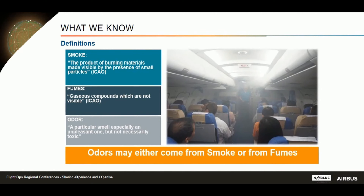A fume, according to the ICAO, is a gaseous compound which is not visible. This means that in case of fumes, you will not see anything, but depending on the source, you may or may not have an odor. Finally, an odor is a particular smell, especially an unpleasant one, but not necessarily toxic. Odors may come from fumes or from smoke, and in our smoke procedure, when we mention smoke and fumes, we also include the case of fumes with odors.